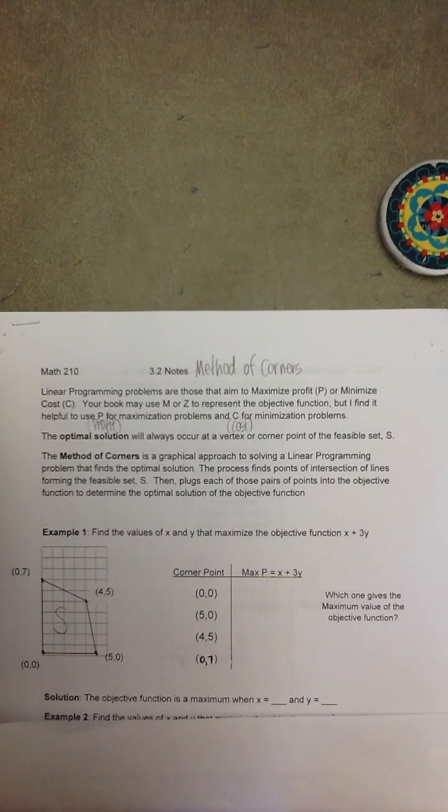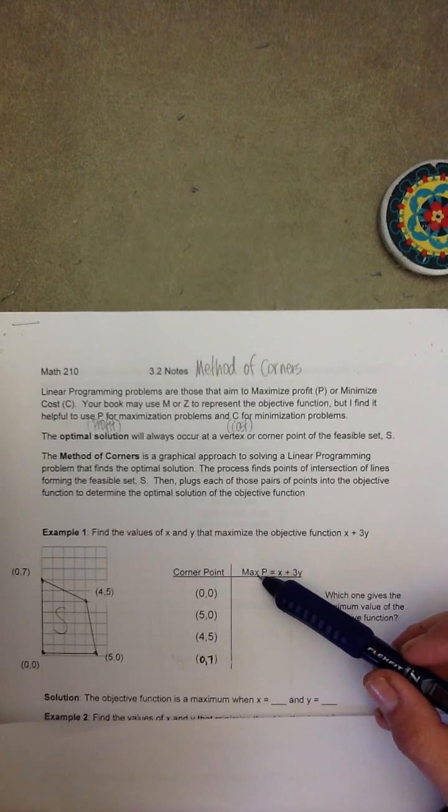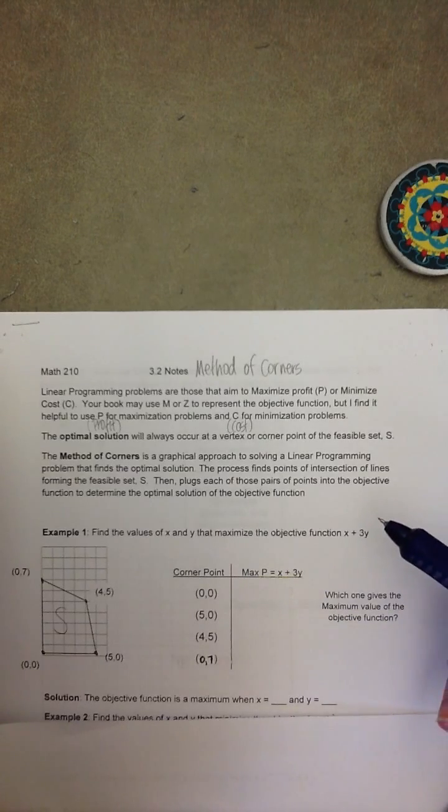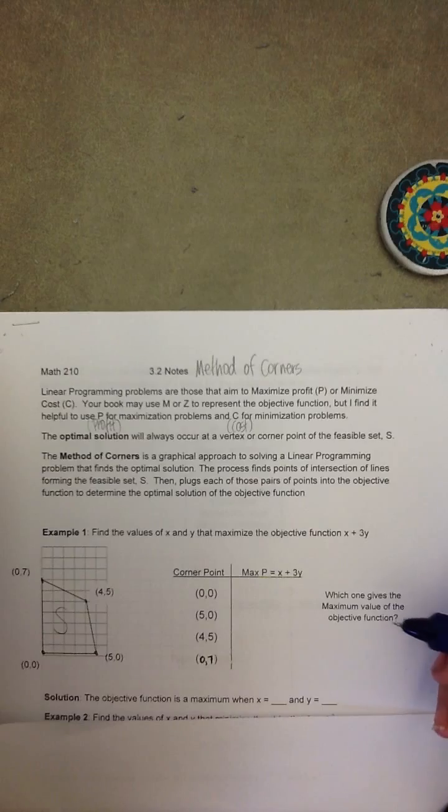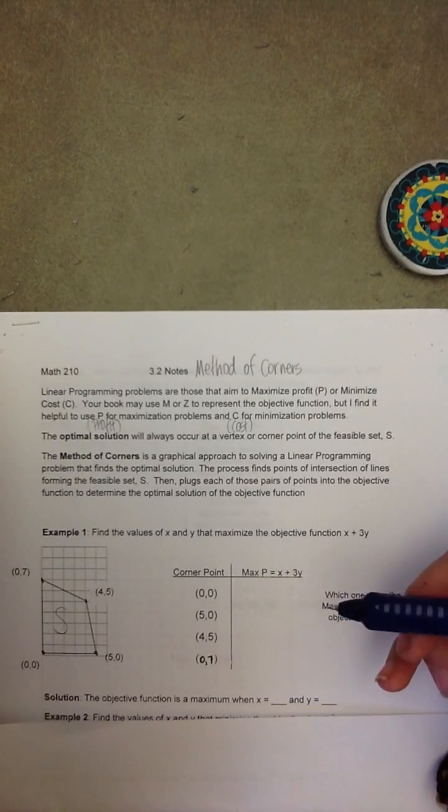So in order to use the method of corners to determine which value optimizes or is the maximum of our objective function, we need to replace the X and the Y with the coordinates of the corner points or vertices.